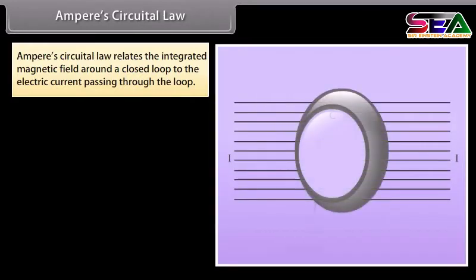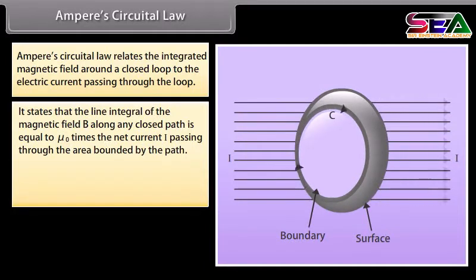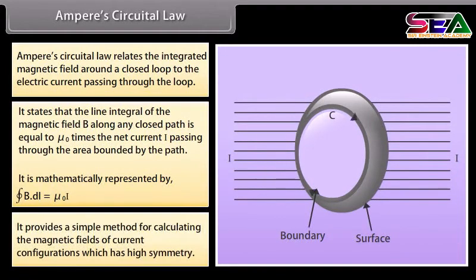Ampere's Circuital Law relates the integrated magnetic field around a closed loop to the electric current passing through the loop. It states that the line integral of the magnetic field B along any closed path is equal to mu nought times the net current I passing through the area bounded by the path. It is mathematically represented by the closed integral of B dot dL equal to mu nought I. It provides a simple method for calculating the magnetic fields of current configurations which have high symmetry.